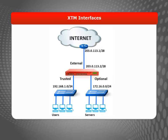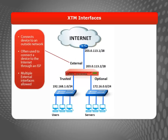In order to understand how to create policies, you should first understand the three security zones of your device, which are the external, trusted, and optional interfaces. An external interface is used to connect your device to a network outside your organization. Often, an external interface is the method used to connect your device to the internet through your ISP, and you can have more than one external interface if you need.